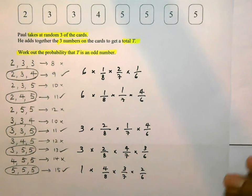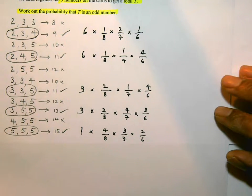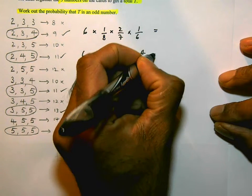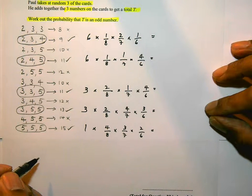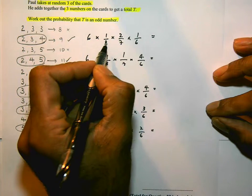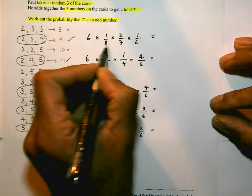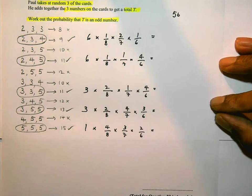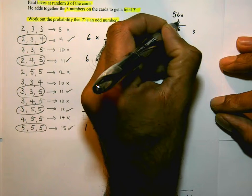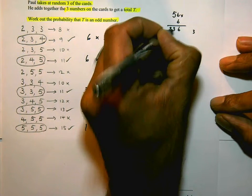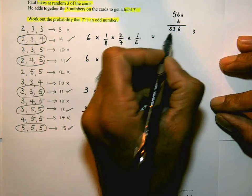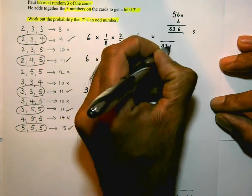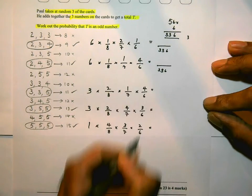It's likely to get a bit messy as we work through this, so just take your time with the number work and make sure you don't make errors. We're going to work out each of these as a fraction, then add up our 5 answers, and that will give us the probability that T is an odd number. First, working out the denominators: 8 × 7 × 6 — 8 × 7 is 56, times 6 gives 336. So the denominator is 336, and it's the same in all five fractions.